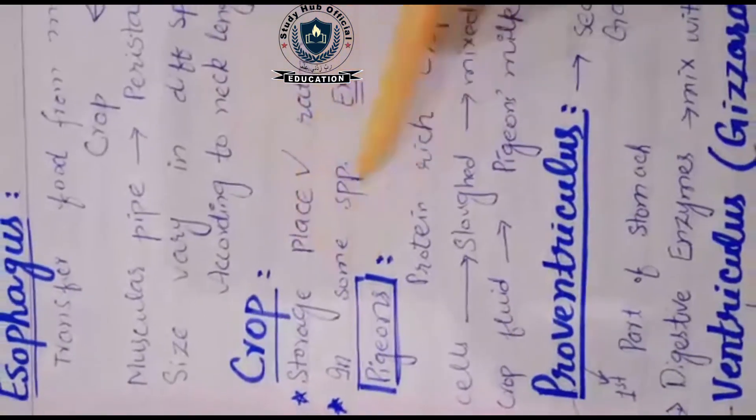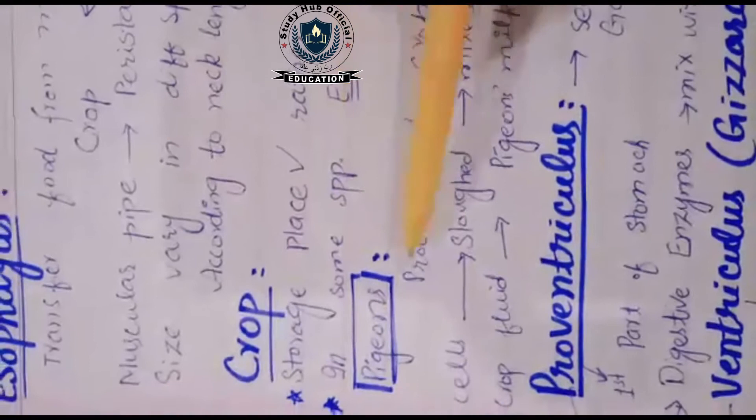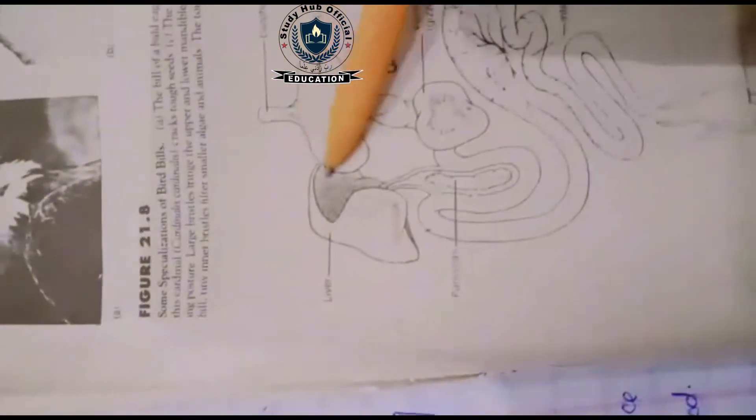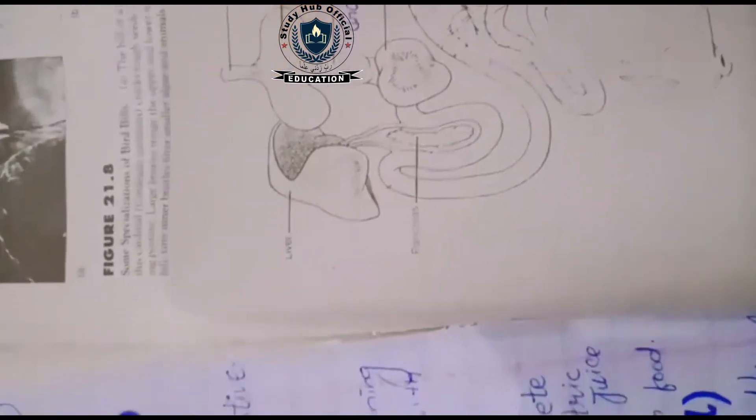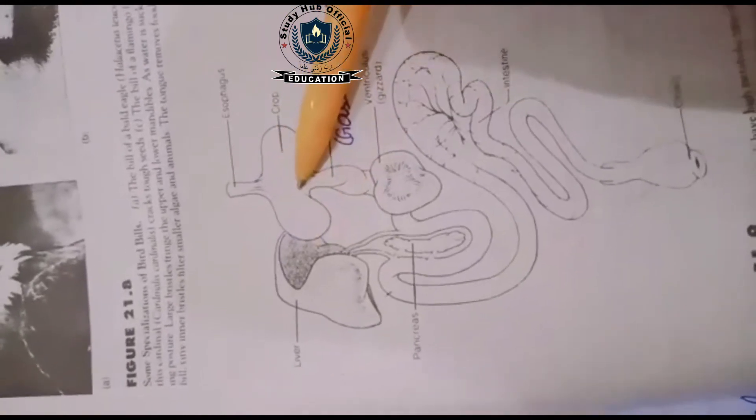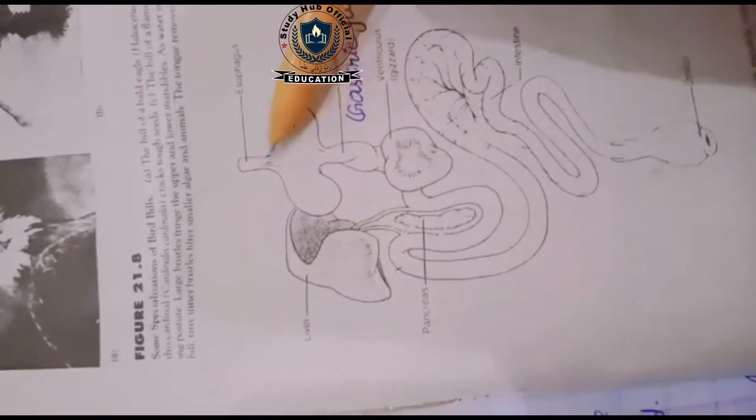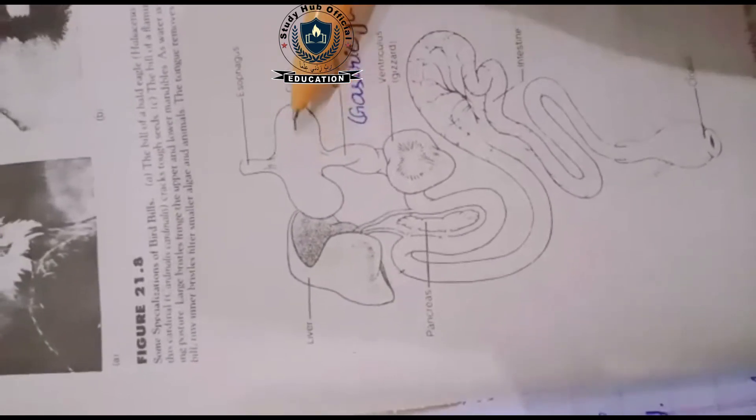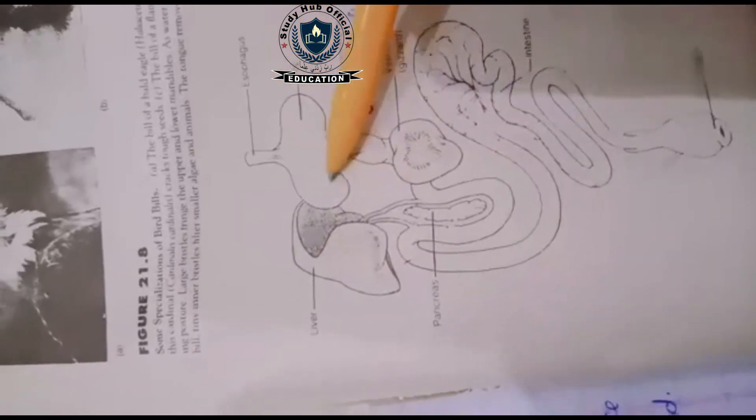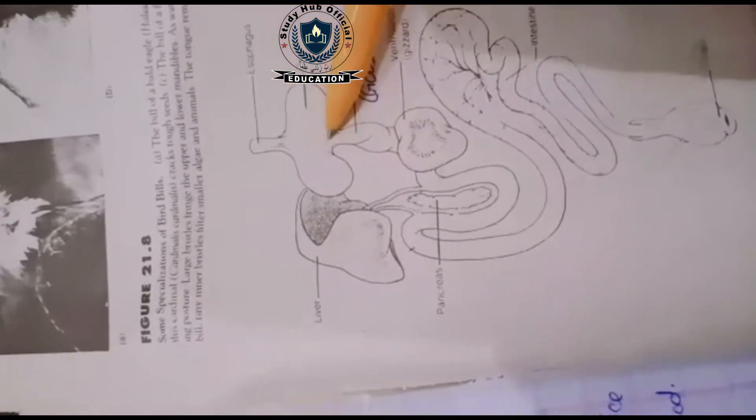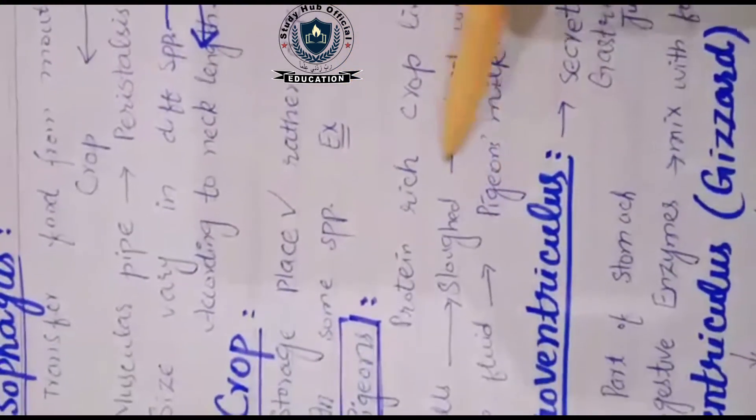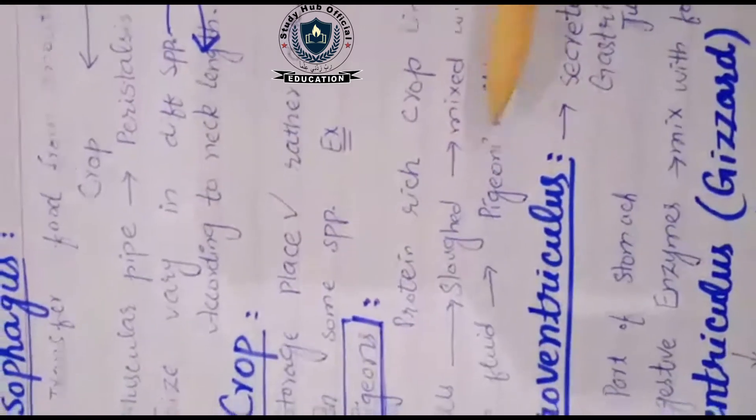In some species, for example pigeons, this crop has protein-rich crop lining cells. When food enters the crop, these cells are sloughed off and mixed with the crop. This is called pigeon's milk, which is used to feed their young.